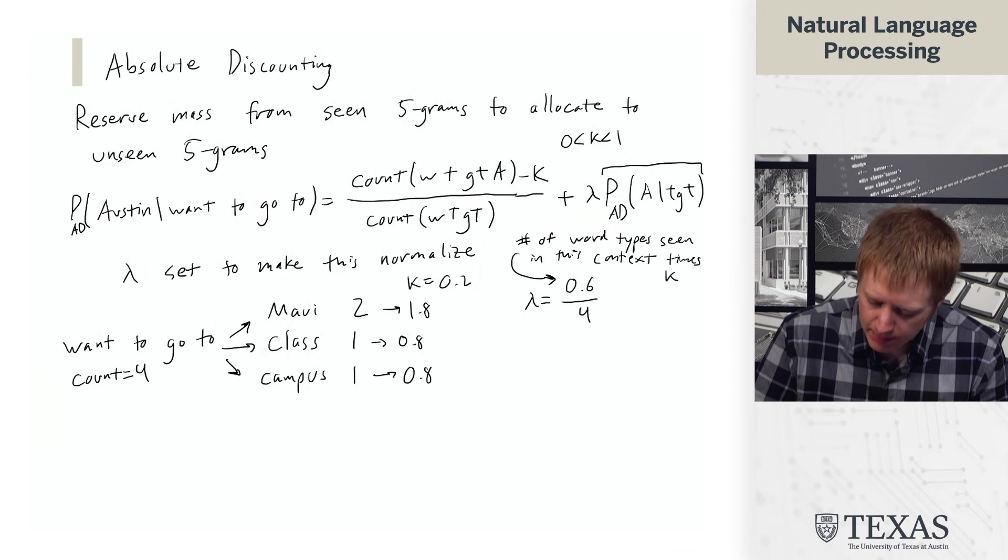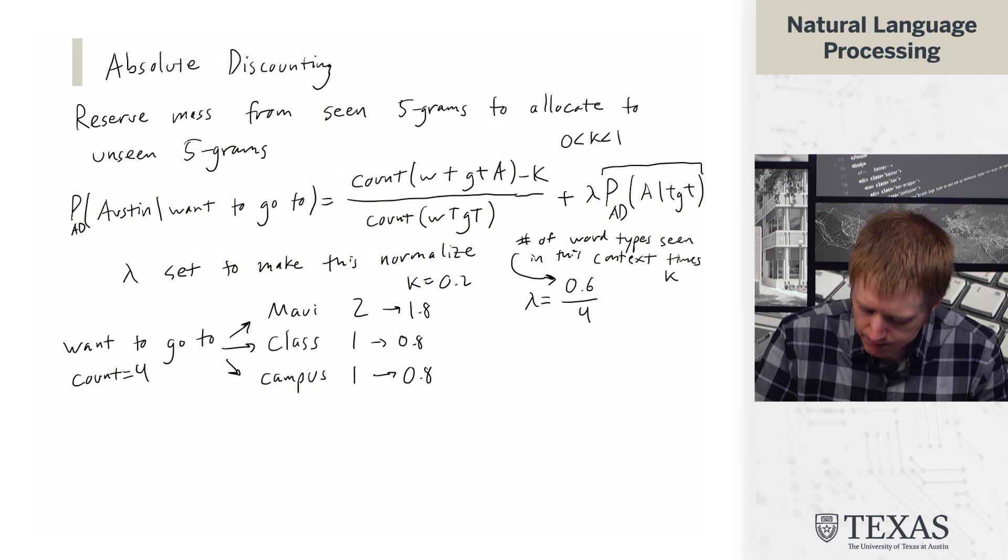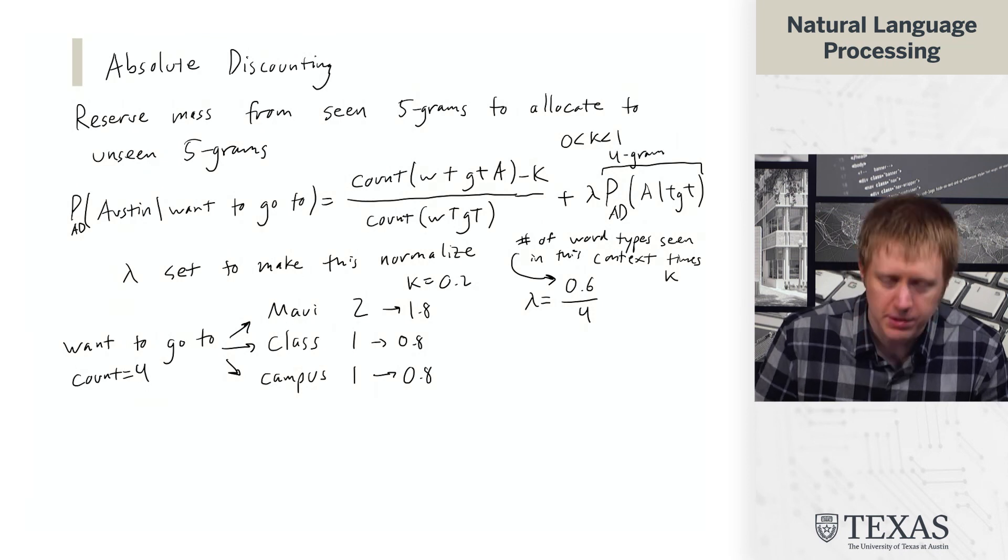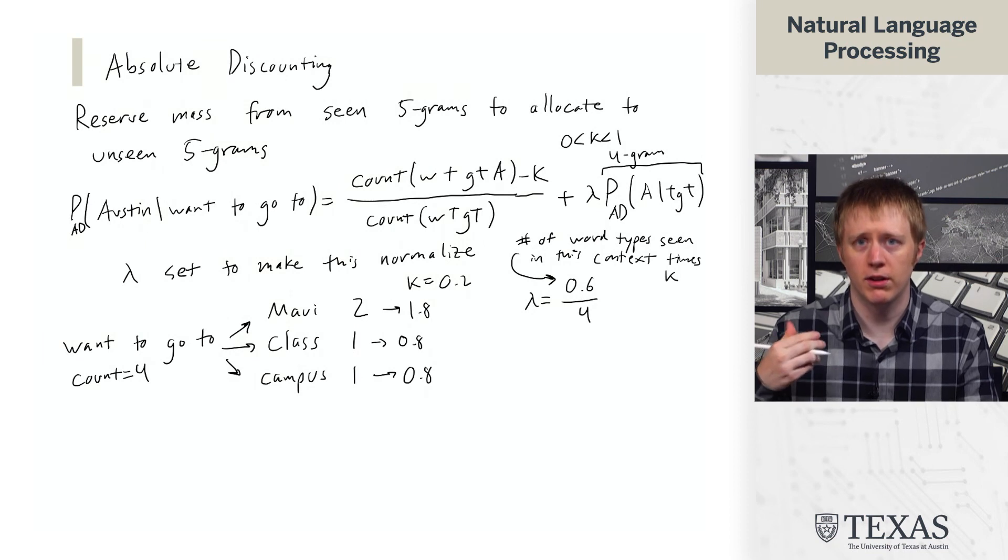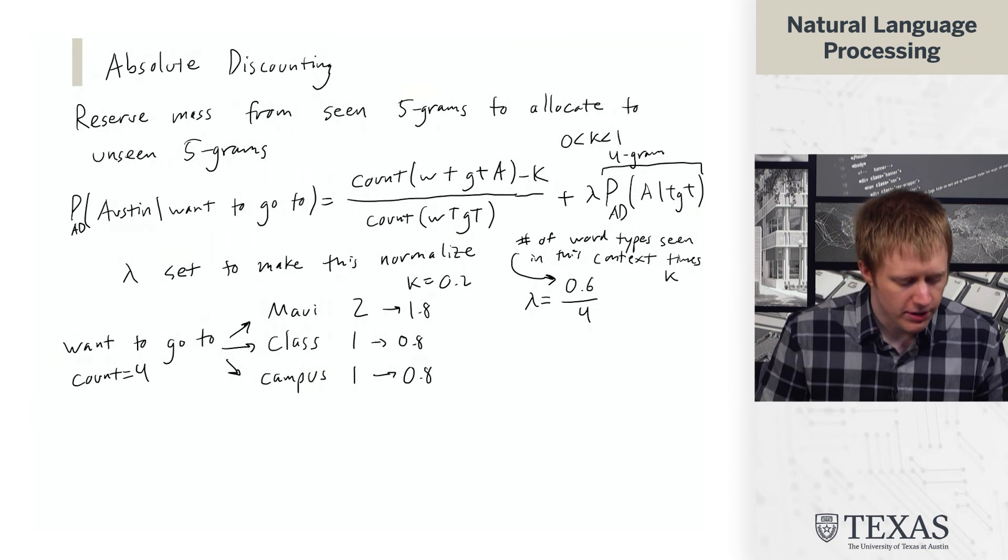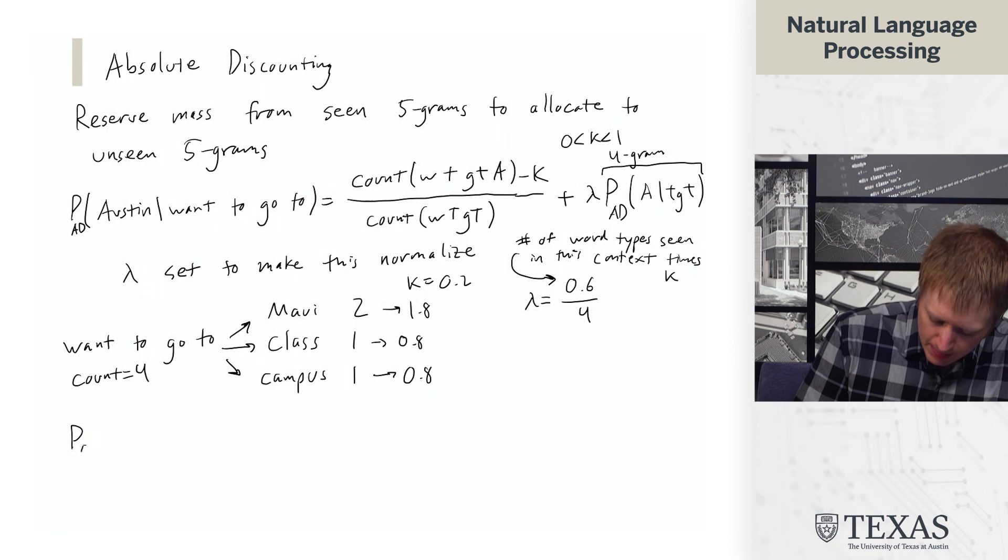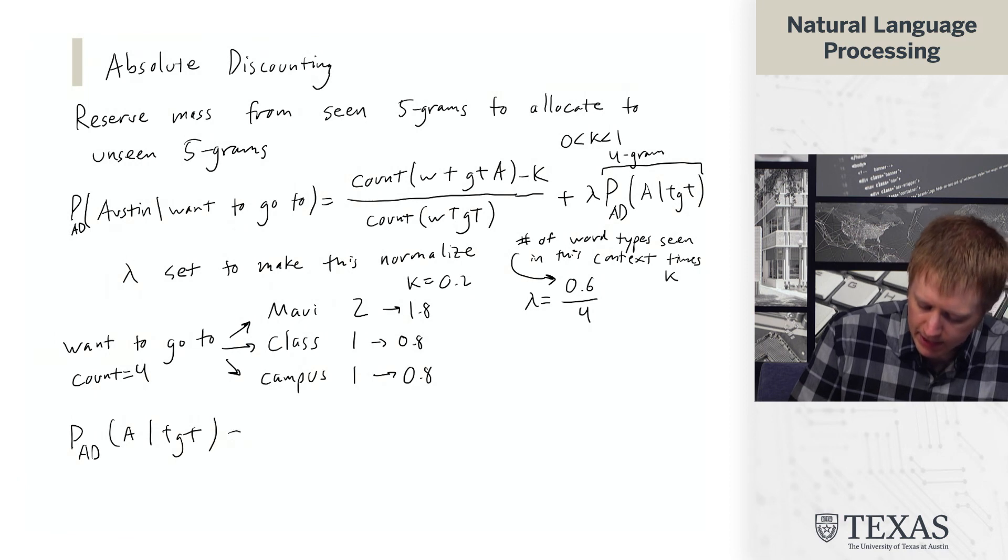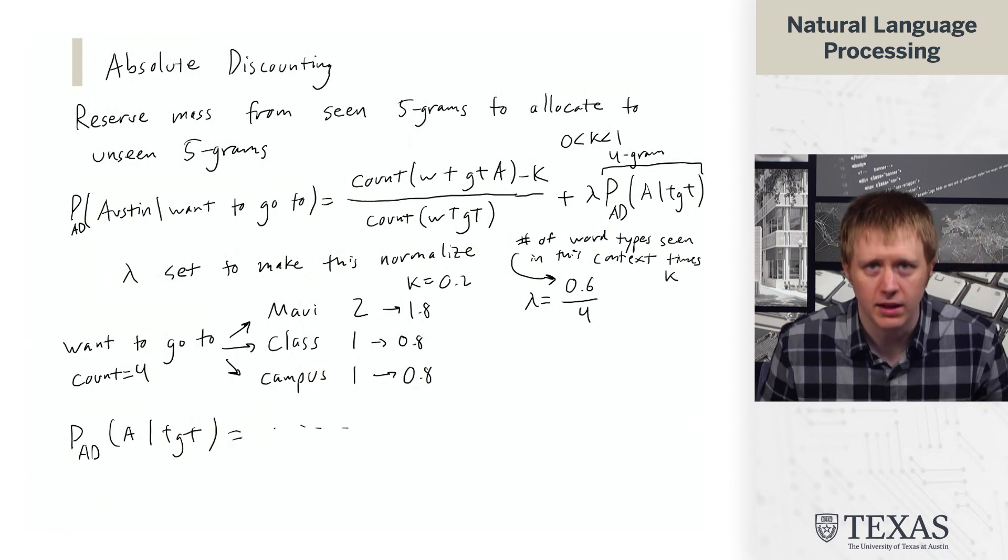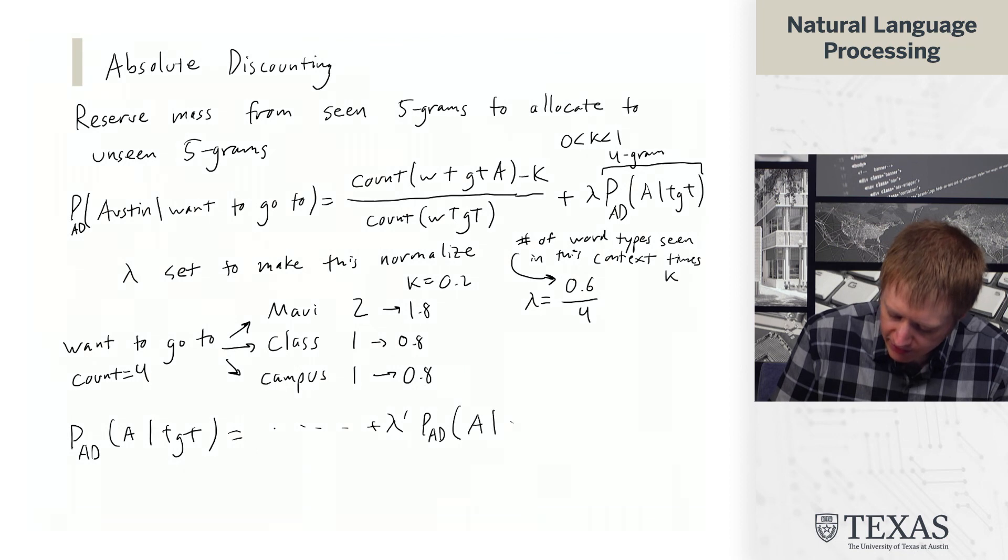So this up here is the 4-gram absolute discounting probabilities for Austin in now a shorter context. So the nice thing about this is that we can do this recursively. So then PAD of Austin given to go to is basically a big expression, the sort of count expression before, plus I'm going to call it lambda prime times PAD of Austin given go to.